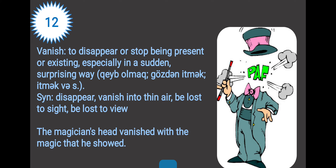And word twelve: vanish. Vanish means to disappear or stop being present or existing, especially in a sudden, surprising way. Its meaning in Azerbaijani is 'qeyb olmaq', 'gözdən itirmək', 'yox olmaq'. The synonyms are disappear, vanish into thin air, etc. For example: the magician's head vanished with the magic that he showed. Poof!